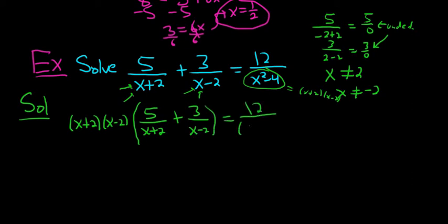I'll go ahead and factor it: (x+2)(x-2) times, and then (x+2)(x-2). Quite a bit of writing in this problem, and I won't skip any steps in this next step.